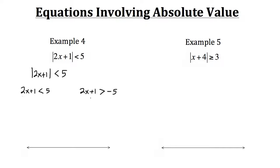So now let's continue solving like we normally do. With this inequality we need to first subtract the 1 and do the same thing on the other side. That gives us 2x is less than 4. Now we just divide by 2, and that gives us x is less than 2. So there's one part of the solution.